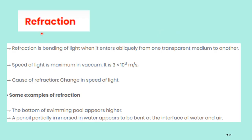What is meant by refraction? Refraction is the bending of light when it enters obliquely from one transparent medium to another medium. When light travels from one medium to another medium, bending of light takes place. That process we call refraction of light. The speed of light is maximum in vacuum — its value is 3 × 10^8 meter per second.